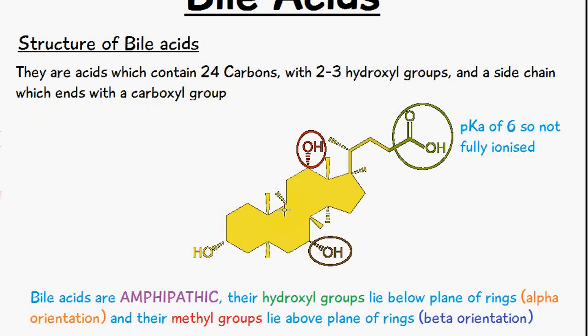This is the 24 carbon chain and we can see we have two to three hydroxyl groups here. You can see the OH here, the OH here, and there's another one here. We can also see a side chain which ends with a carboxyl group which is here.